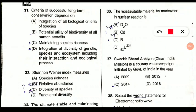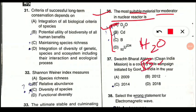Question 36: The most suitable material for a moderator in a nuclear reactor is what? Options are D2O, cadmium, boron, and uranium. The correct option is D2O, which is heavy water, used as a moderator in nuclear reactors. Other moderators include normal water (H2O), beryllium, and graphite — which is a form of carbon. These four — water, heavy water (D2O), graphite, and beryllium — are used as moderators in nuclear reactors.